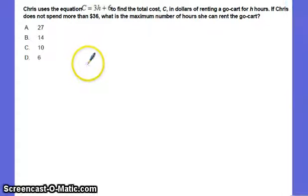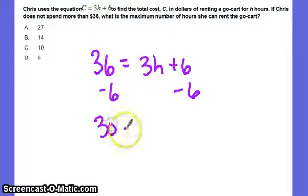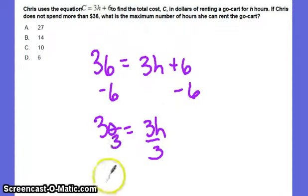Chris uses this equation, c equals 3h plus 6, to find the total cost c in dollars of renting a go-cart for h hours. If Chris does not spend more than 36, what is the maximum number of hours she can rent the go-cart? Subtract 6 from both sides. We have 30 is equal to 3h. Divide by 3, 10 is equal to h.